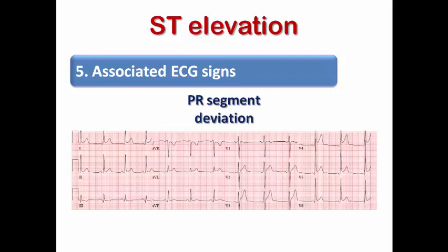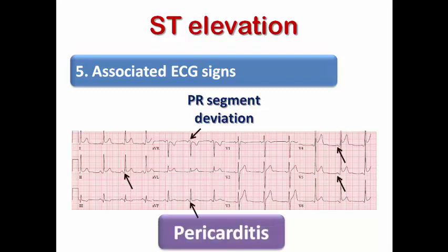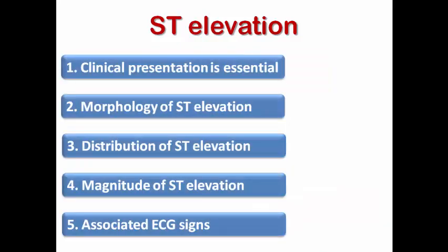PR segment deviation is an important associated ECG sign. If I see diffuse ST elevation with PR segment depression — and opposite findings in aVR showing PR elevation, the knuckle sign — this is suggestive of pericarditis rather than STEMI. Clinical presentation should always be correlated to confirm. To summarize, the five criteria to differentiate ST elevation causes are: clinical presentation, morphology of ST elevation, distribution, magnitude, and associated ECG signs.